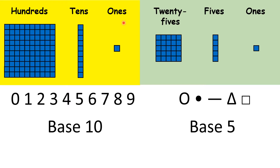With the Rigglesfordian number system, I have 5 symbols, which means that I have a base 5 number system. That means that when I have 5 of something, I move to the next place value column along, so each place value is 5 times larger than the place value before it.